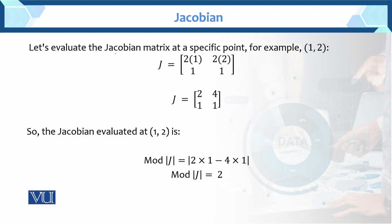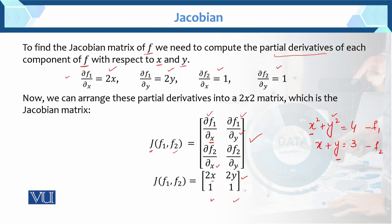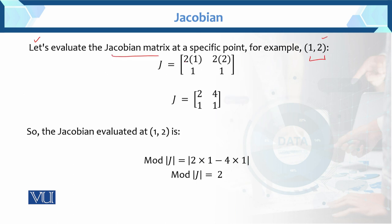Further, to evaluate the Jacobian matrix at a specific point — suppose x equals 1 and y equals 2. The Jacobian of f1, f2 gives us 2x and 2y. So at x equals 1 and y equals 2, we get: 2(1) equals 2, 2(2) equals 4, 1 and 1. Here is the Jacobian evaluated at that point. We then take the mod, which is the determinant of the Jacobian, to get a positive scalar value.